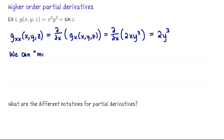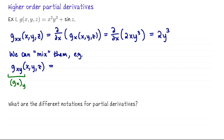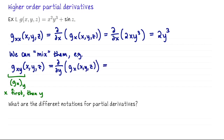Let me compute g sub xy. This is what we call a mixed partial derivative. This means first differentiate with respect to x, then y. So you can think of this as g sub x sub y. We're going to compute d/dy of the partial derivative of g with respect to x. So that's d/dy of 2xy³, which is going to be 6xy².